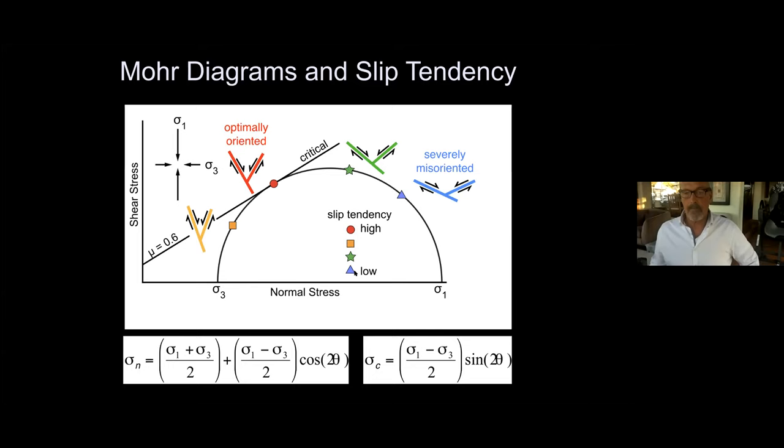Notice that if differential stress is great enough for optimally oriented faults to be critical, severely misoriented faults like low-angle normal faults are still very stable and plot tens of megapascals below the frictional failure line.